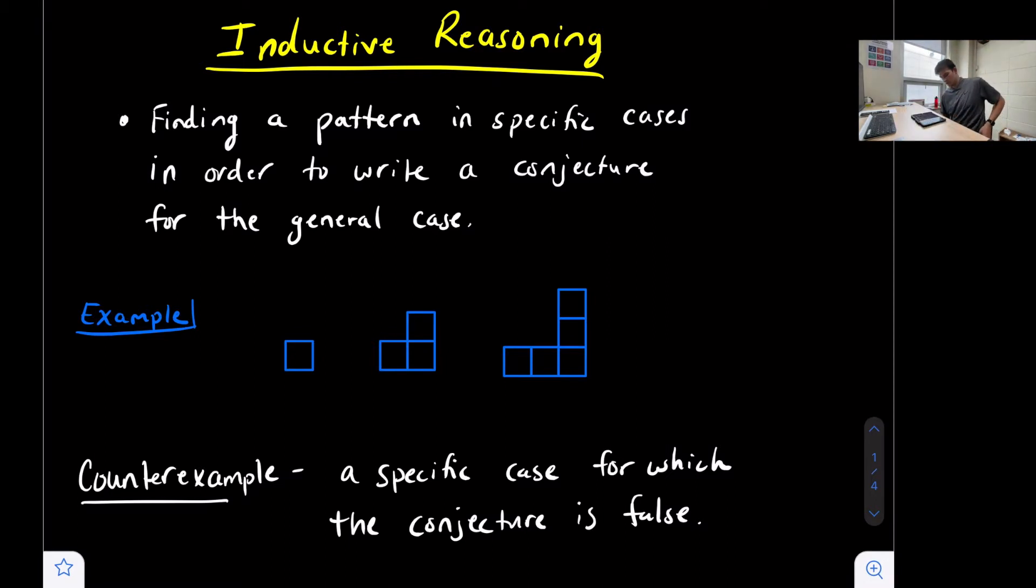They might ask us, based on the pattern, what is happening? What's going on here? So we look and we start with just one single square, and then we have three squares, and we have five squares. But how are they adding the squares?